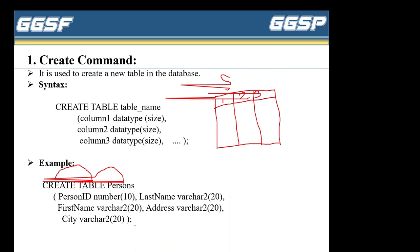To summarize: the CREATE command syntax is — CREATE TABLE, which are keywords, followed by the table name you want to create. Then inside brackets, write the first column name, a space, then the data type and size, comma. Second column name, data type, size, comma. Third column name, data type, size. Close the bracket and add a semicolon.